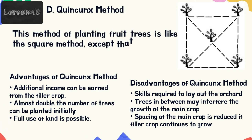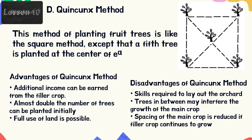Quincunx method: this method of planting trees is like the square method, except that a fifth tree is planted at the center of each square. As a result, the tree number in a unit area becomes almost double the number in the square method. The additional tree in the center is known as a filler. Advantages: additional income can be earned from the filler crop; almost double the number of trees can be planted initially; and full use of land is possible.